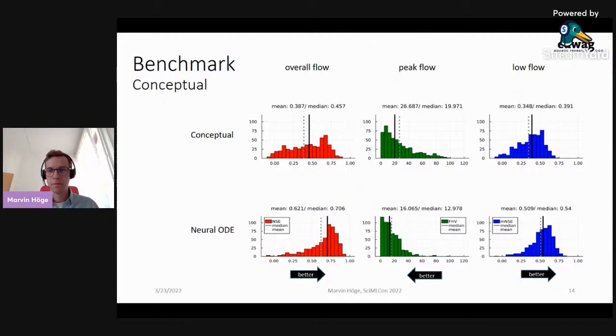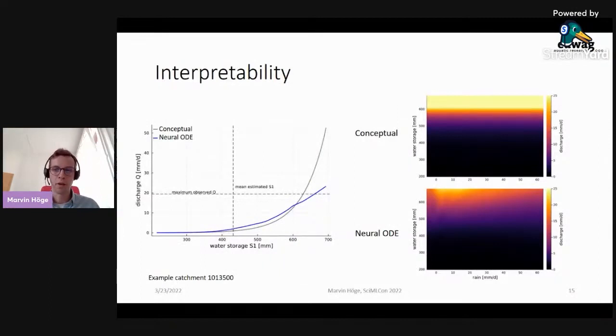The nice thing now is that with the neural ODE approach, we can also look at individual processes. On the left, the dependence of discharge to the water storage variable is shown for an example catchment. And as you can see, the fixed relation of the conceptual model in gray shows an increase that is too strong and therefore leads to an overestimation of discharge for high water storages. The learned relation of our neural ODE model, on the other hand, covers the range of observed discharges much better, which also leads to better flow metrics.